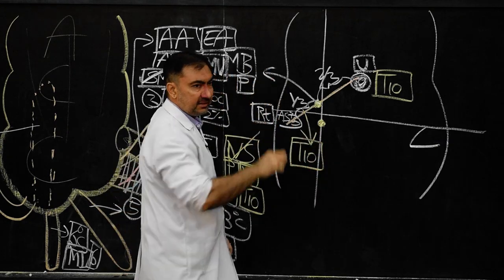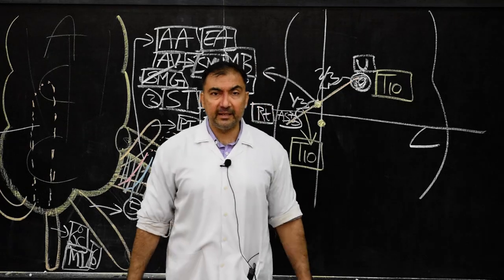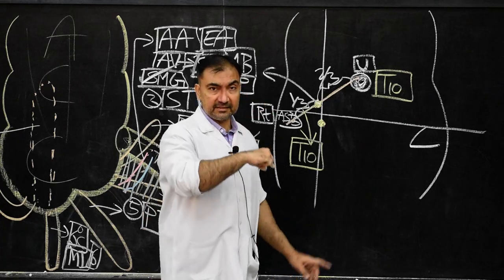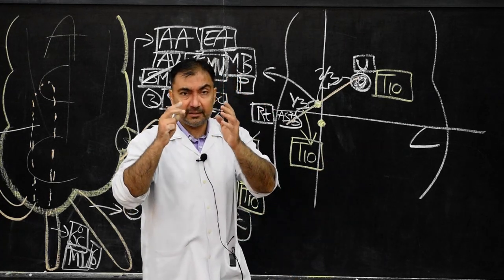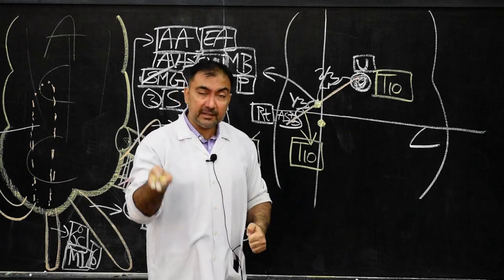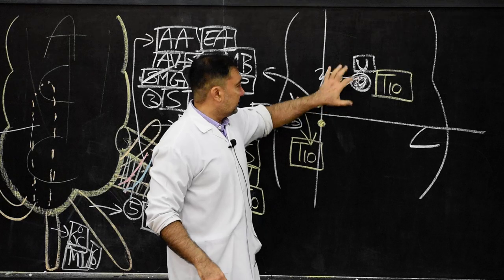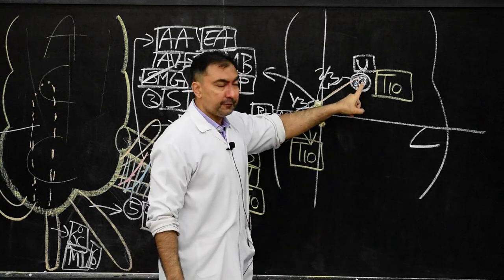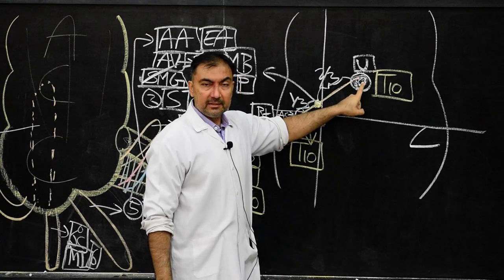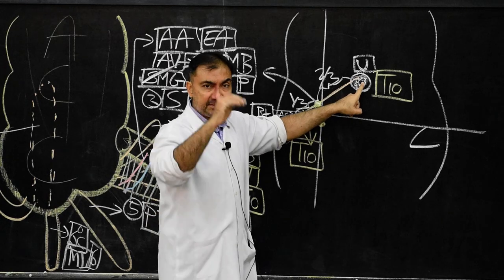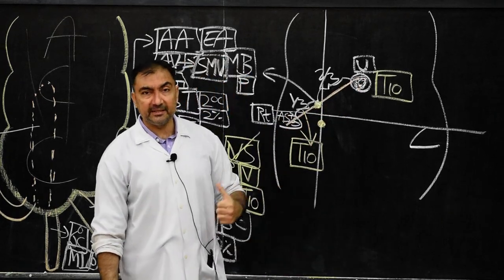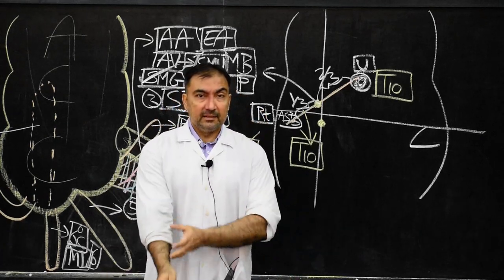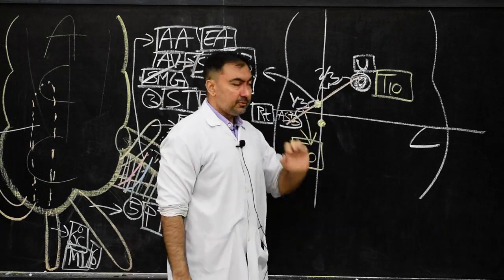Because both the appendix and the umbilicus share the T10 spinal segment — the dermatome of the umbilicus is T10, and the pre-ganglionic sympathetic fibers for the appendix are from T10 — the pain of the appendix is referred to the umbilicus. Therefore patients having inflammation of the appendix complain of pain and tenderness in the umbilical region.